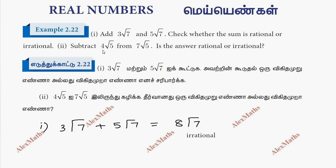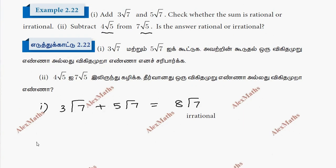Subtraction 2: subtract 7 root 5 minus 4 root 5. Subtract 7 minus 4, that gives 3. So the result is 3 root 5. This is irrational.